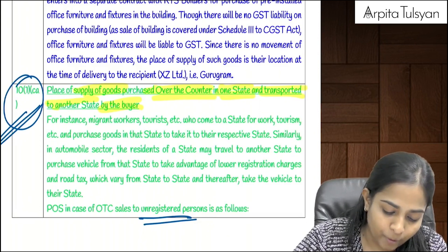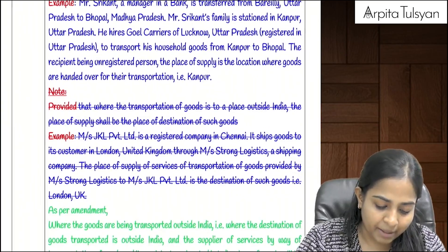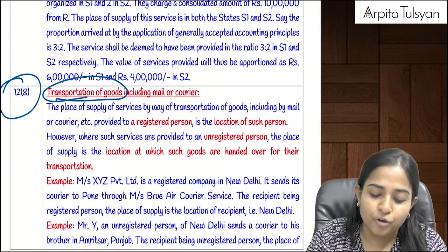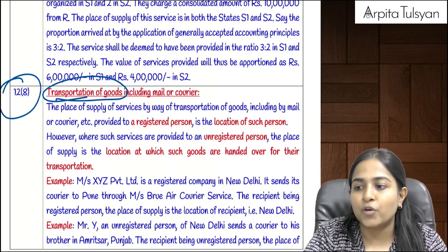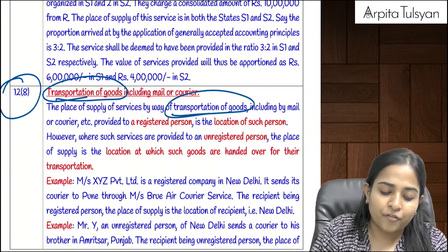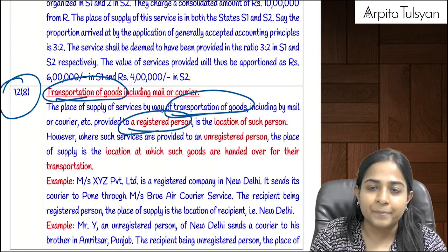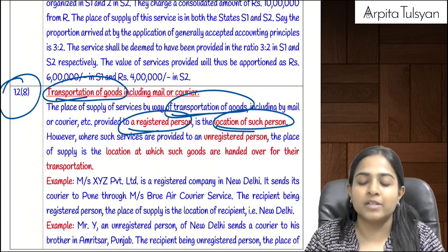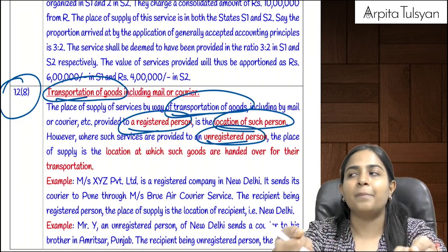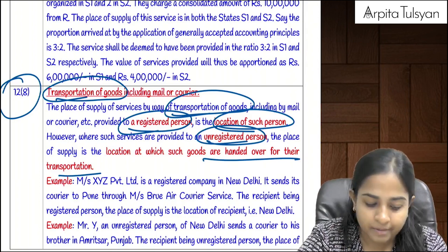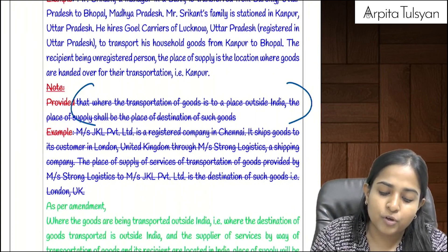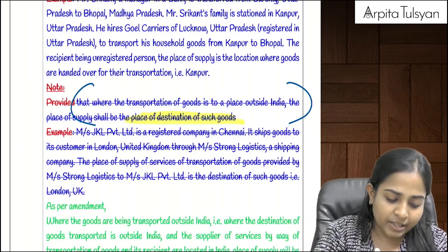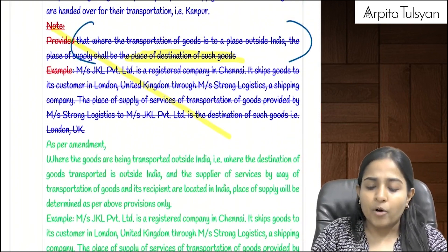The second amendment relates to Section 12(8), covering transportation of goods services. Previously, there was a proviso stating that if goods were being transported outside India, the place of supply was the destination of those goods (outside India). This proviso has now been proposed to be removed entirely.